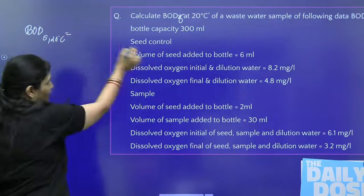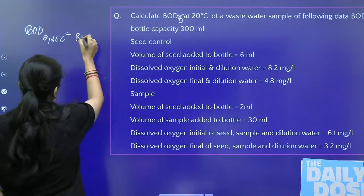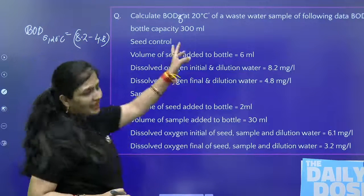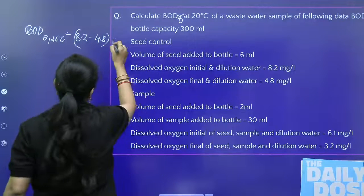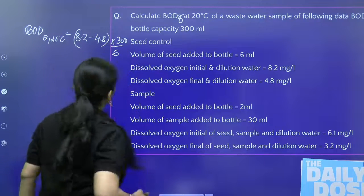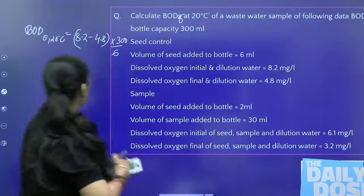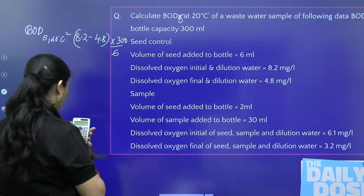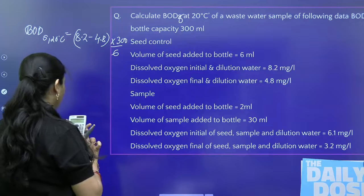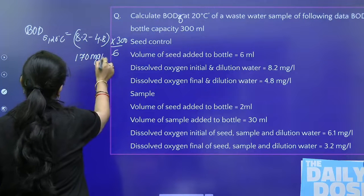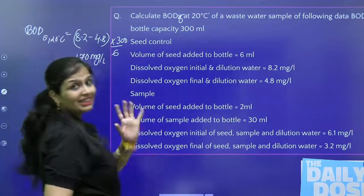So DO initial is 8.2 mg per liter, DO final is 4.8 mg per liter, water capacity is 300 ml, and volume of seed added to bottle is 6 ml. So let's solve it. BOD equals (8.2 minus 4.8) times 300 divided by 6, which comes out to 170 mg per liter. So this is the BOD at 5 days, 20 degrees Celsius for the seed control sample.